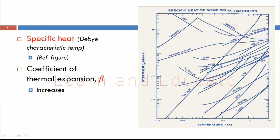Other properties like specific heat, also characterized by the Debye characteristic temperature, show significant changes. The specific heat of materials in the range of zero to one Kelvin is seen to vanish — decreasing from values of 10 to the power minus 1 down to 10 to the power minus 2. The coefficient of thermal expansion beta increases when the temperature is reduced to cryogenic range.